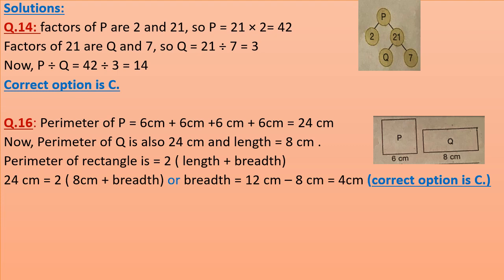Question 16: See the figure on the right side. The perimeter of square P equals that of rectangle Q. The side of square P is 6 cm, so its perimeter = 6 + 6 + 6 + 6 = 24 cm. Therefore the perimeter of Q is also 24 cm. Its length is 8 cm. Using perimeter of rectangle = 2 × (length + breadth): 24 = 2 × (8 + breadth), so breadth = 24 ÷ 2 − 8 = 12 − 8 = 4 cm. The correct option is C.